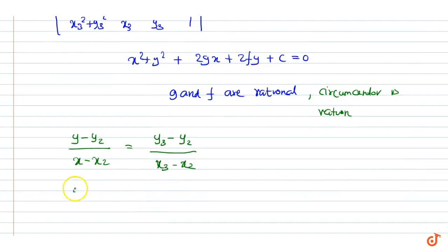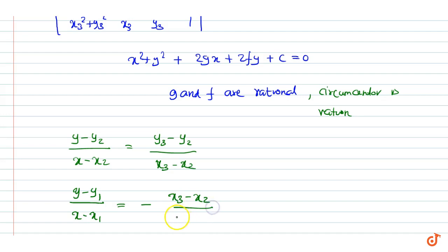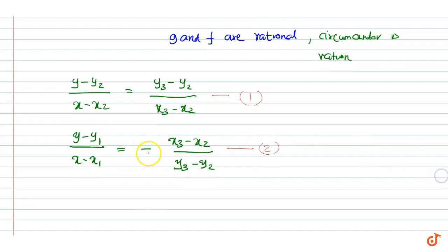We can see that if (x1, y1), (x2, y2), and (x3, y3) are rational, the orthocenter is also rational. Therefore, we can say the orthocenter is rational if the vertices are rational.